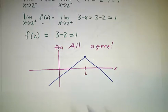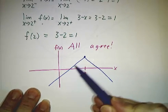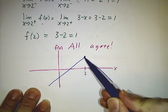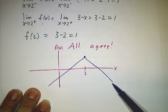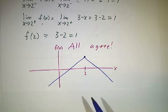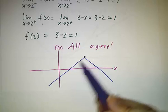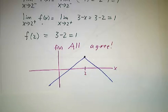The graph looks something like this. We're given this line up to 2, we're given this other line beyond 2, and the two formulas neatly meet in the middle. It's a perfectly nice continuous function.